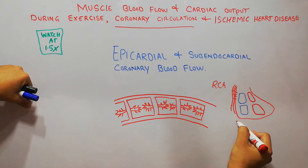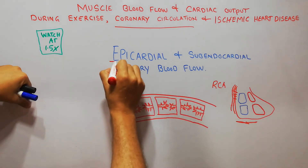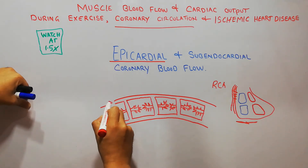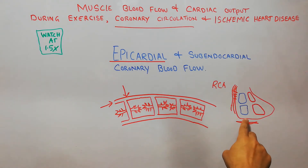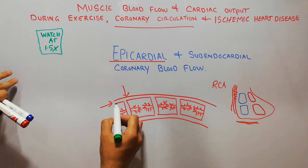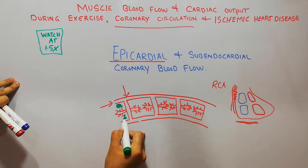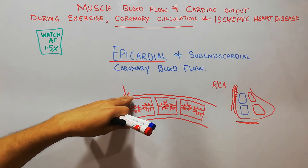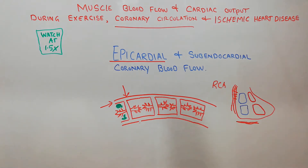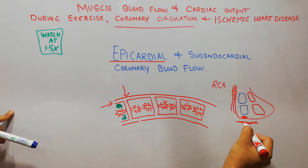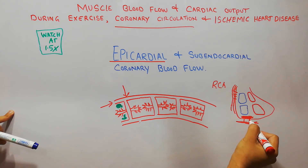On the outer portion we have blood vessels which are the epicardial blood vessels, present on the outside of the heart. To take blood deeply inside the muscles, we have intramuscular branches that penetrate deep into the heart muscle. Branches coming from these epicardial vessels supply the muscles — these are the intramuscular branches.